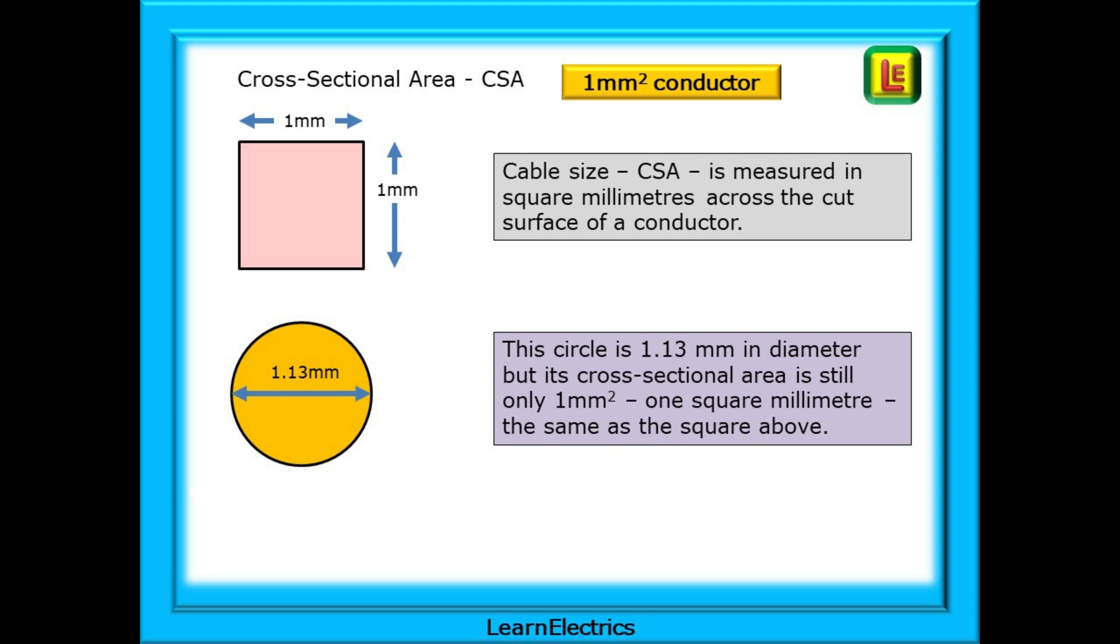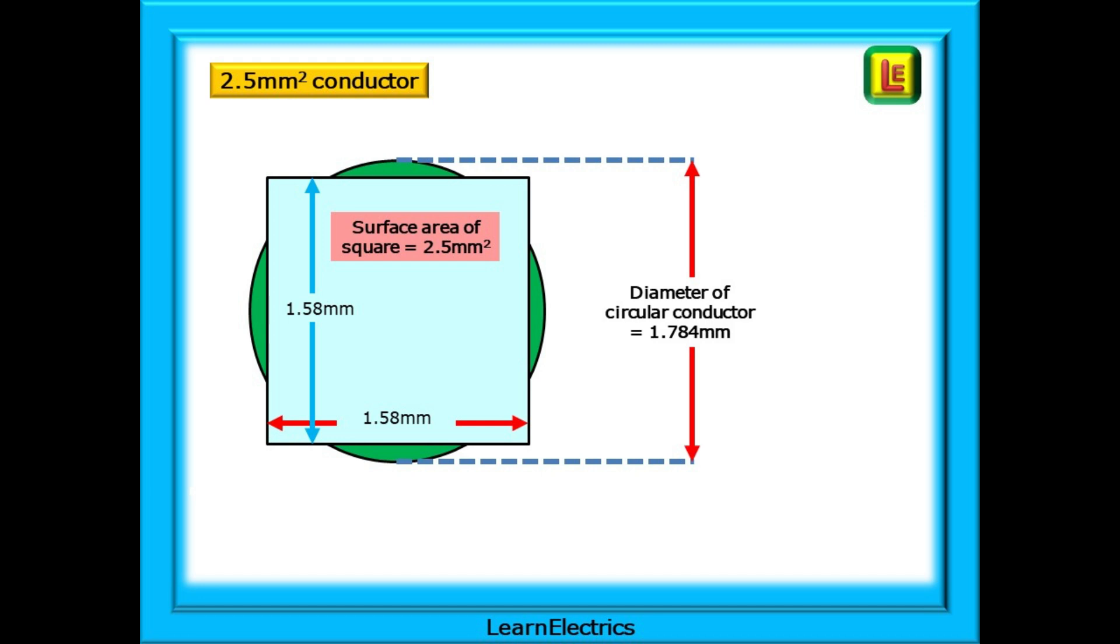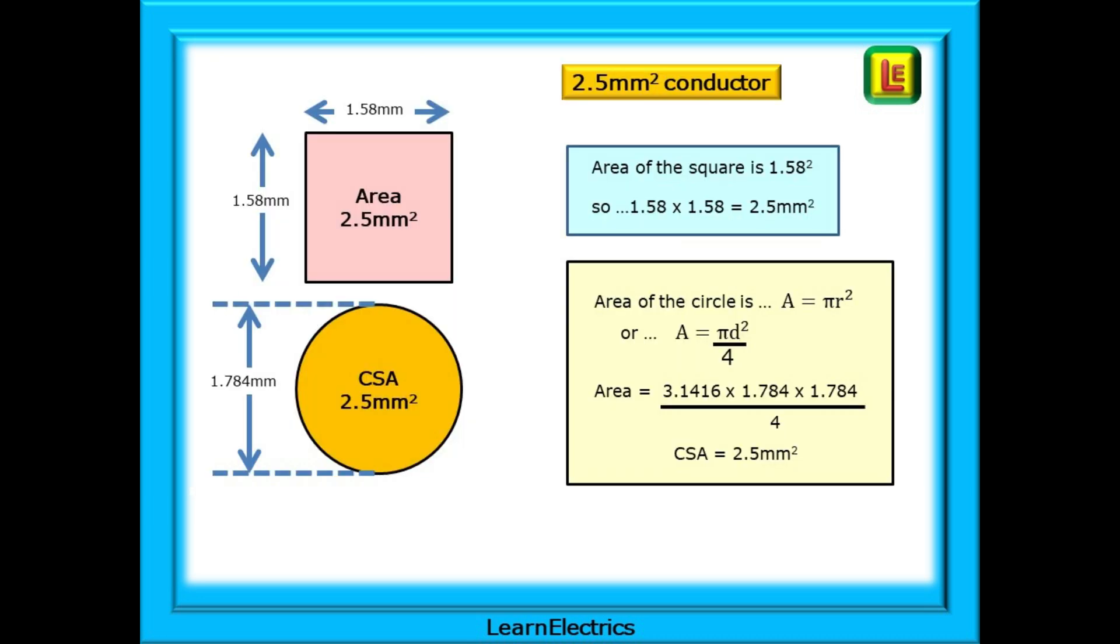The same area or CSA as the square above it. Look at this 2.5 square millimeter conductor. Nothing here relates to 2.5 millimeters. If it was a square conductor it would have sides of length 1.58 millimeters and if it was round as we normally expect then the diameter is 1.784 millimeters. Let's do the maths on this. The area of the square conductor is 1.58 or 1.58 multiplied by 1.58. Try this in your calculator. The answer is 2.5 square millimeters when rounded up.